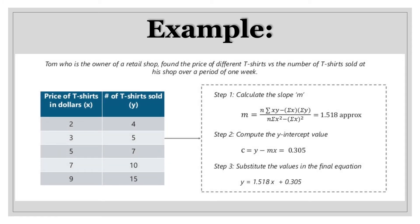In this example, Tom is an owner of a retail shop and he has found the price of different t-shirts versus the number of t-shirts sold at this shop over a period of one week. The price of t-shirts in dollars is your x variable and the number of t-shirts sold is your y variable, with values given in a table. Step one to calculate line of best fit is to calculate your slope m. We have the values of x and y, and n is equal to 5 because we have 5 data points in total. Substituting all values in the equation, we get m equal to approximately 1.518.